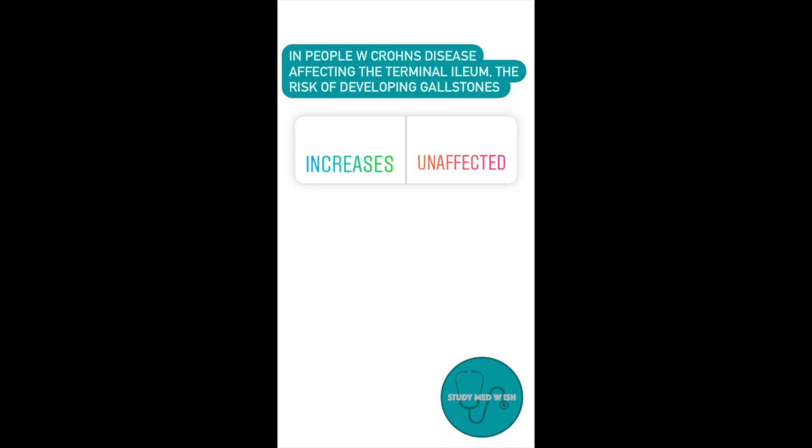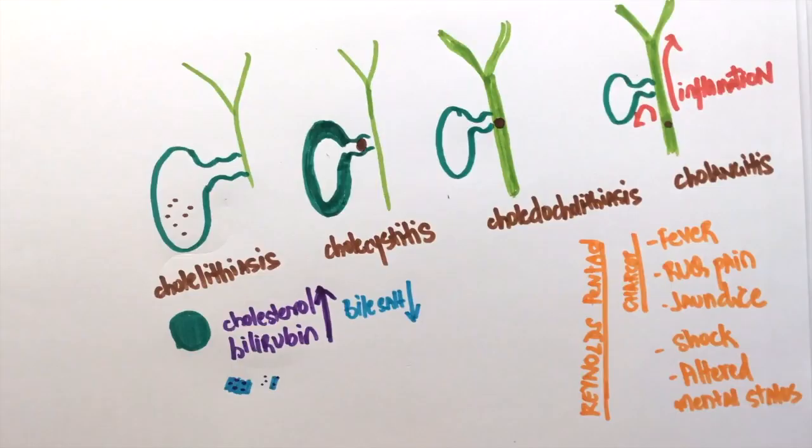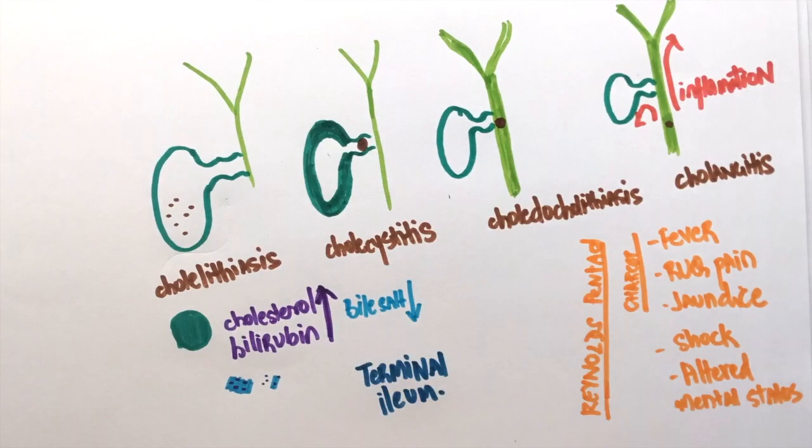Question number six. In people with Crohn's disease affecting the terminal ileum, the risk of developing gallstones is? The answer to this question is higher. From the previous question, we know that bile salts reduce the likelihood of forming gallstones. Bile salts are absorbed at the terminal ileum. So, a pathology in the terminal ileum will decrease bile salt absorption and increase the risk of gallstone formation.